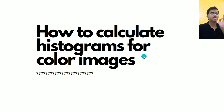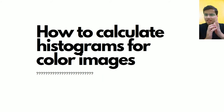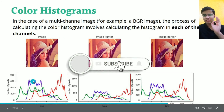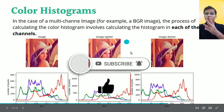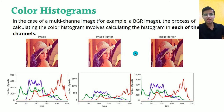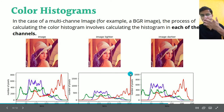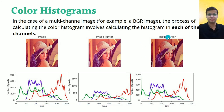How to calculate histograms for color images? Simple — when we have color images, we go channel by channel. For an image with R, G, and B channels, we extract the histogram of each channel separately. If we make the image lighter, each histogram shifts toward the darker values. The peak of the red channel, for example, moves forward; if darkened, it shifts back.